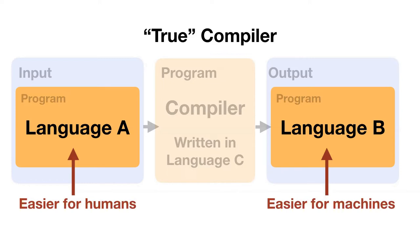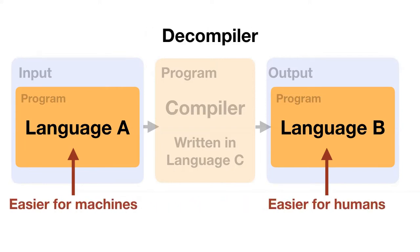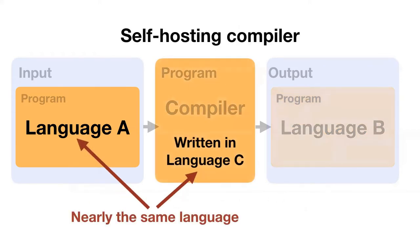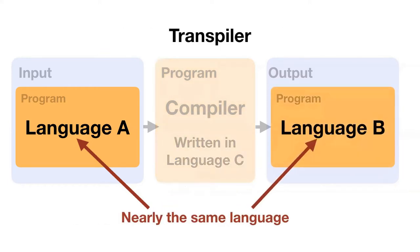You can swap those and have a decompiler — that's a thing people do when analyzing an existing program or reverse engineering it. A self-hosting compiler is when the input language and the language the compiler is written in are actually close to the same language, also called a bootstrapping compiler because it can compile itself. A transpiler is when the input language and the output language are nearly the same — all of these terms are a little fuzzy, particularly transpiler, because 'nearly the same' is very weaselly and depends on your point of view.